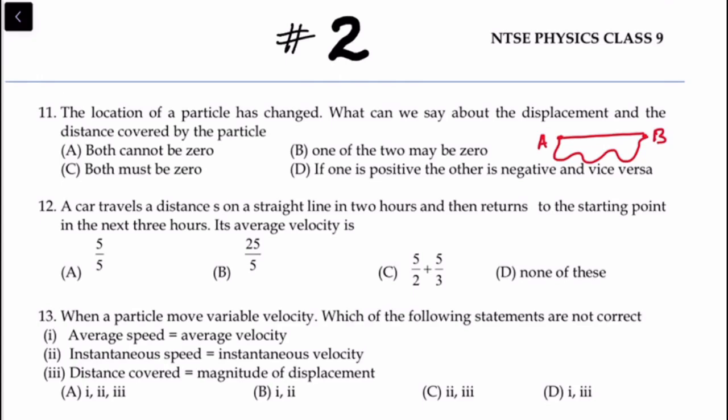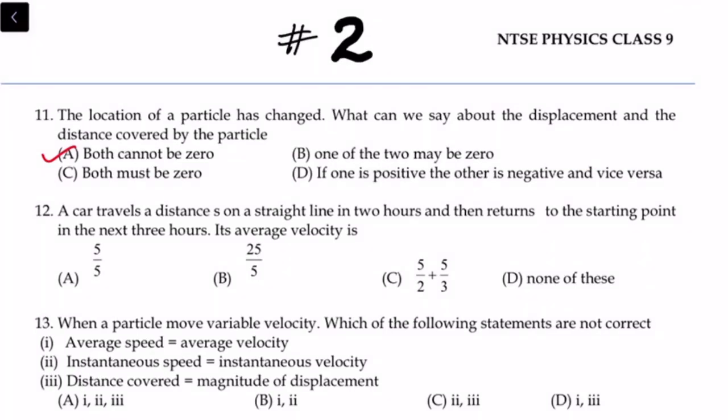Both being zero is not possible because the position has changed (dono ka zero hona possible nahi hai kyunki position change hui hai). For the same reason, 'both must be zero' is also incorrect. The correct answer is: both cannot be zero — because if position has changed, both distance and displacement will be non-zero.